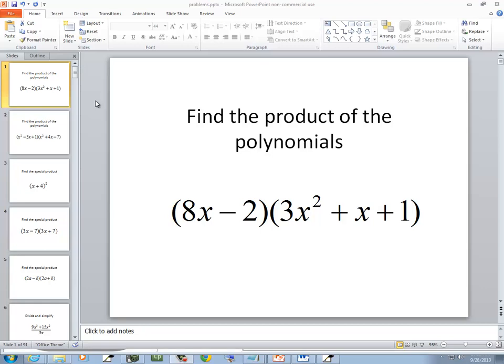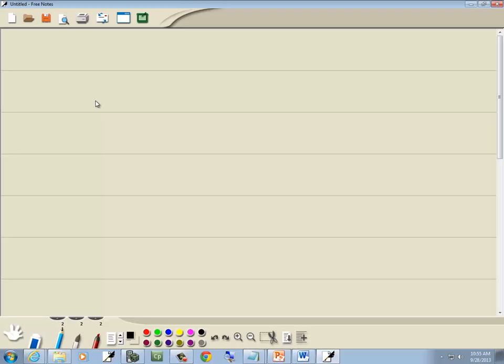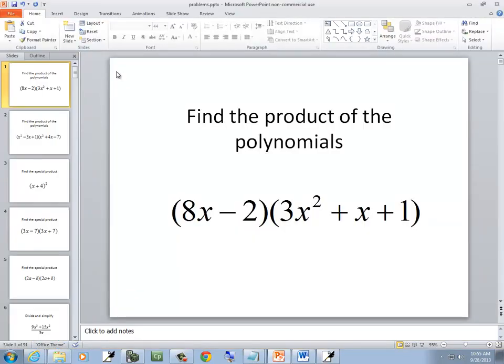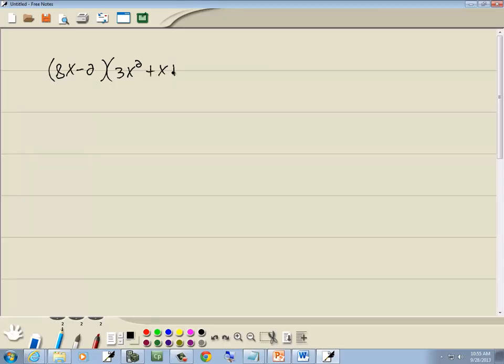In this problem, we want to find a product of the polynomials. So I've got 8x minus 2 times 3x squared plus x plus 1.